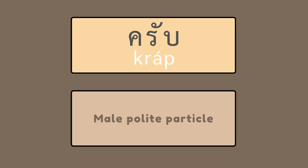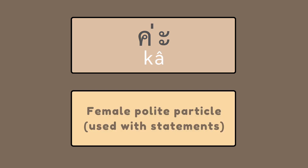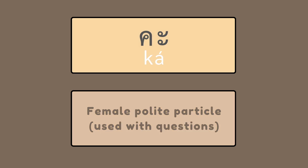ครับ — male polite particle. Now repeat: ครับ. ค่ะ — female polite particle, used with statements. Now repeat. ค่ะ — female polite particle, used with questions. Now repeat: ค่ะ.